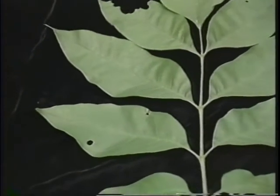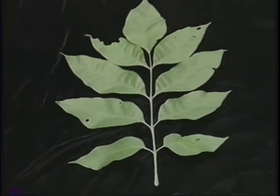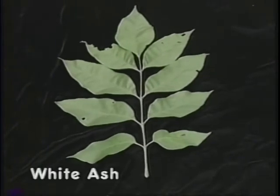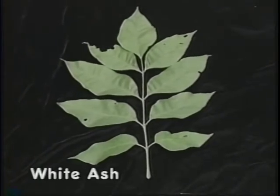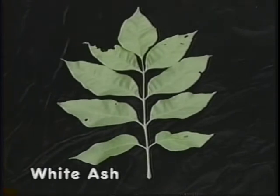White ash has five to nine leaflets and has a total length of 12 inches with a conspicuous terminal leaflet. Each leaflet is ovate in shape, broader at the base than at the apex, and finely serrated. The leaf arrangement is clearly opposite.